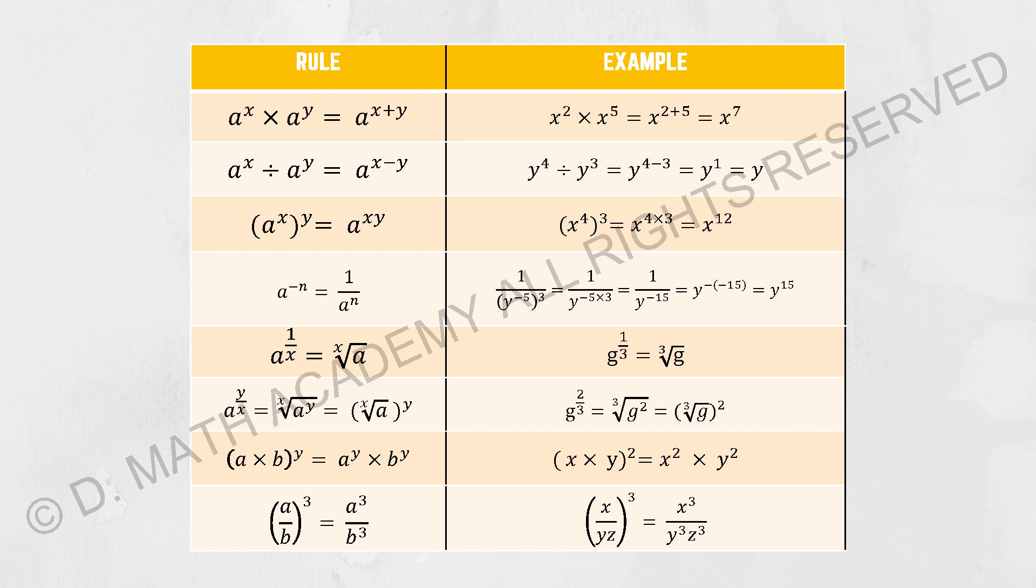For division, it becomes minus. And if there's a bracket with another power outside, these two variables you multiply together.